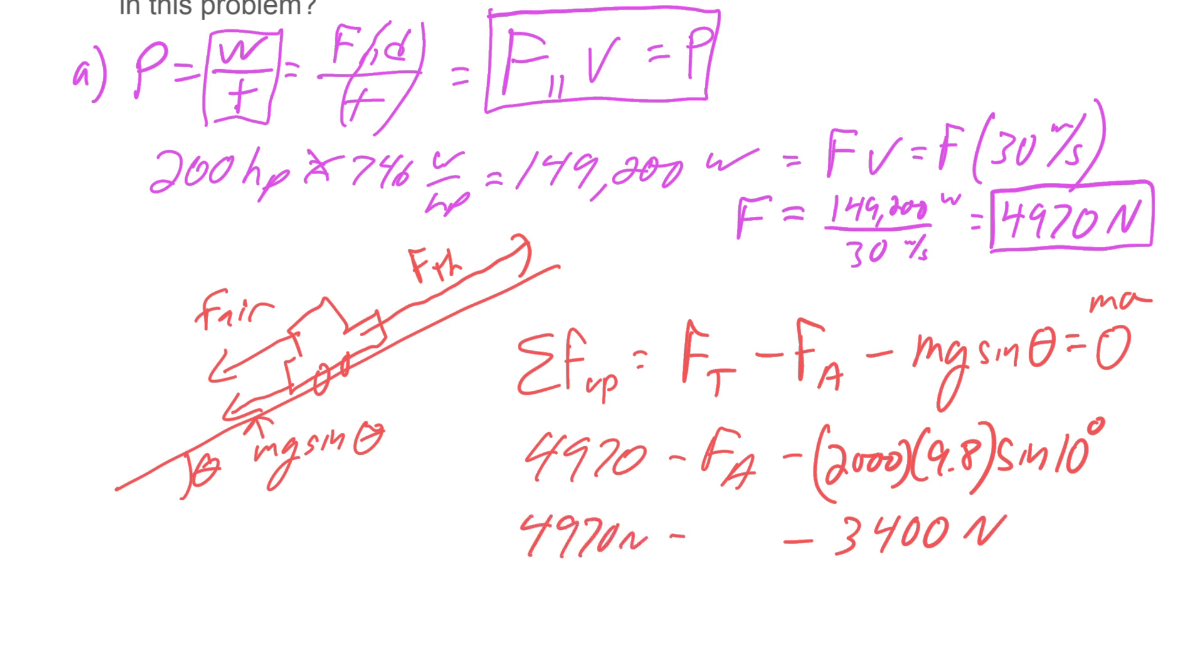So we had 4,970 newtons minus F_air, which is going to essentially be the difference between those two. That's going to be equal to zero. So our air resistance here would be 4,970 minus 3,400 equals 1,070 newtons. That would be the air resistance in this problem.